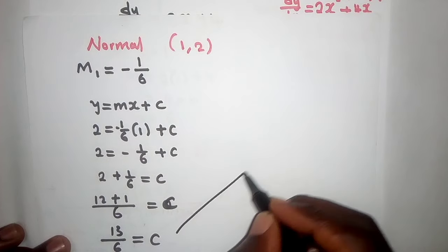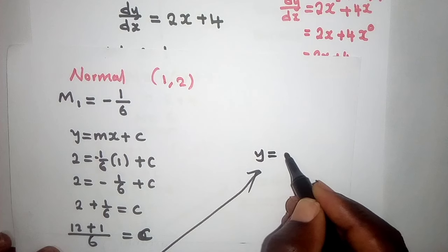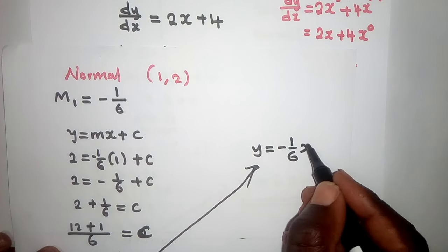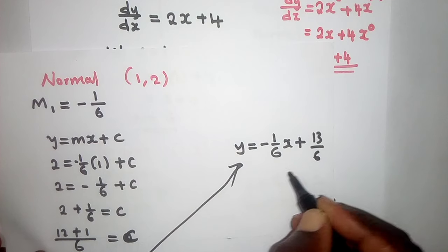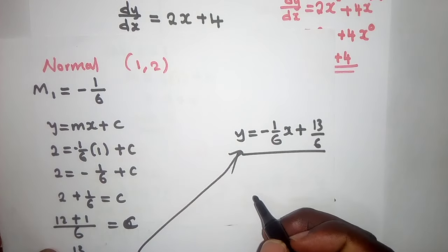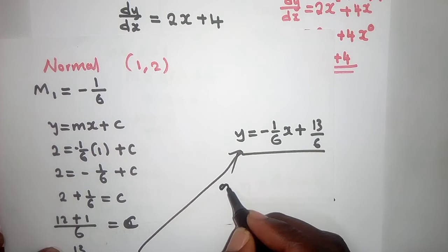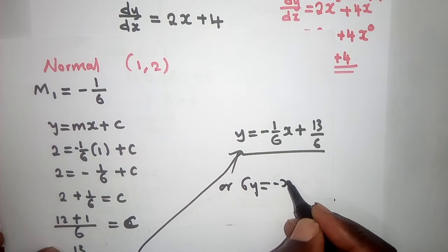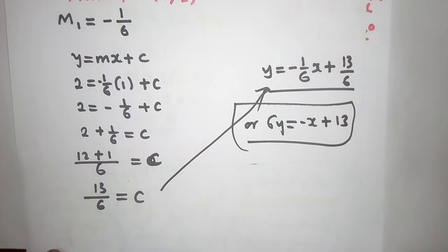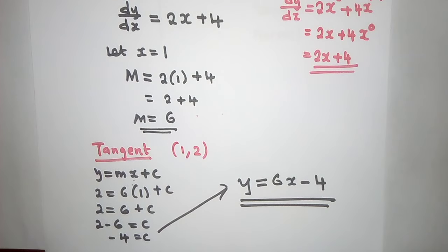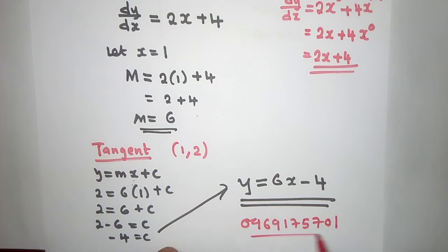So we write our equation: y = −(1/6)x + 13/6. This is the equation of the normal to the curve. Or equivalently, 6y = −x + 13. It's just the same. For those who would like to do online tutorials with us in Mathematics, Additional Mathematics, Science, and Biology, you can contact us on 0969 175 701. Thank you so much.